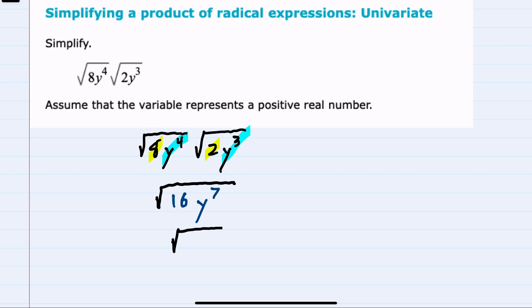Under the radical, we now have this 16, which is a perfect square. The square root of 16 is 4, so we can pull that 4 outside.